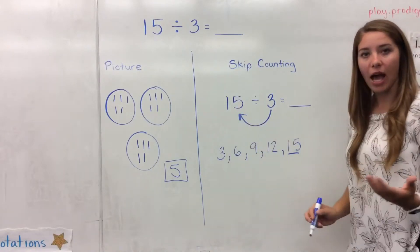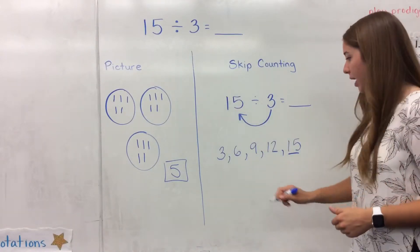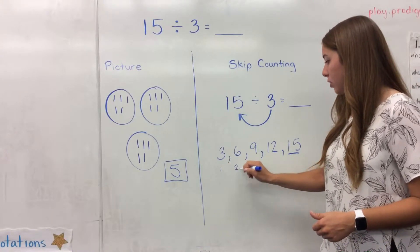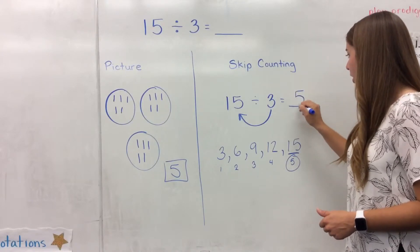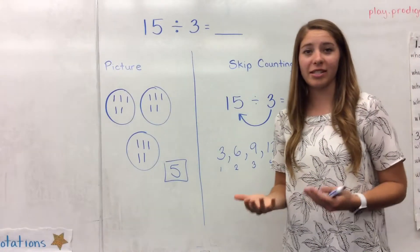Once I get to that number 15, I'm going to count up how many times I had to skip count. 1, 2, 3, 4, and 5. So there is my answer of 5. You'll notice that as I skip counted, I was singing the 3s song.